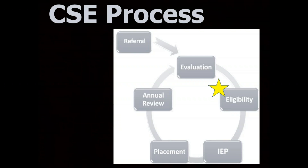The committee will look at what kind of classroom is appropriate based on the IEP needs. Every year, the IEP is reviewed by the committee, which means parents are involved as well. At the annual review, a program for the next school year will be developed. It's important to know that a CSE meeting can be held at any time — this is called a program review, and if a parent wants this, they should submit a letter to the CSE chair.